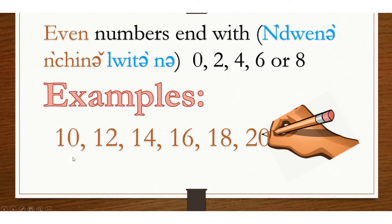When any number ends with 0, 2, 4, 6, or 8, that number is even, no matter how large the number is.